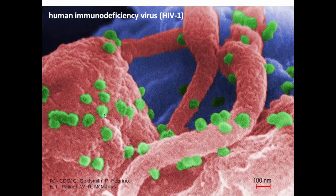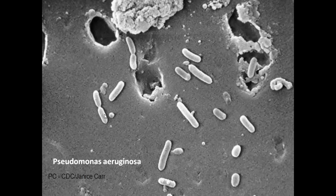Here is Pseudomonas aeruginosa. These rod-shaped organisms you can see on your screen are Pseudomonas aeruginosa — this image has been fantastically captured. An important point: you may have heard that in burn units, no vegetation, no flowers, and no food items are allowed.